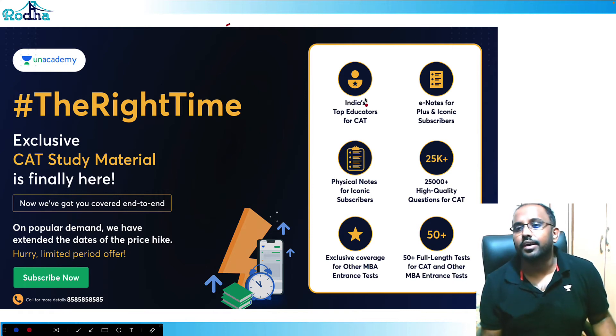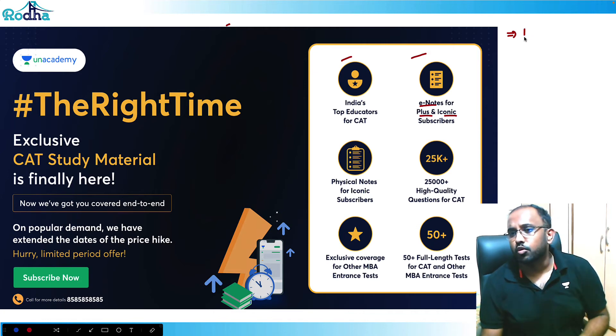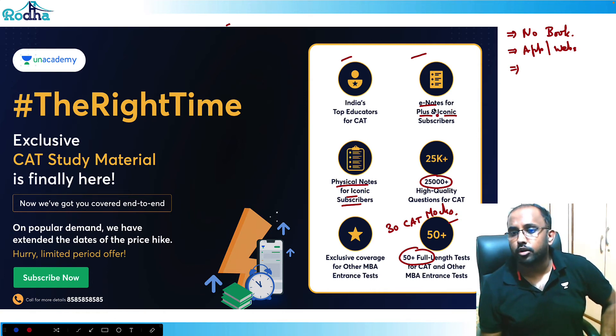And also guys, if any of you are looking to join any classes for the last five, six months of your preparation, so we have got everything covered at Unacademy. I have been working a lot on these projects of building e-notes, which will be available for plus and iconic people. It is going to be launched next month only, so all the modules will be launched in next one month. And it contains some good high-quality questions, complete theory, a lot of solved examples. So basically, it is my project only. There's no book needed if you join classes. Apart from that, there are 25,000 plus questions in the app. So you don't need to practice from anywhere else. We are now giving 50 plus full-length mocks. In that, around 30 there will be 30 CAT mocks. Also, there will be physical notes available for the iconic people. But all the notes are available in the e-view format for all the plus and iconic people.